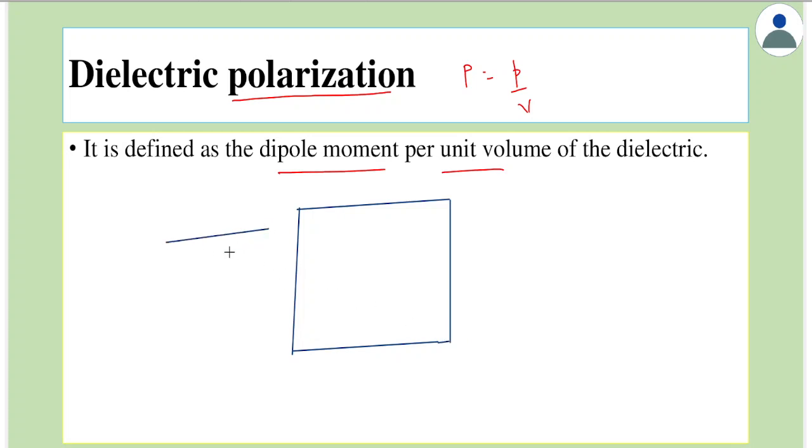If we apply an external field, then the dipoles would be polarized. Suppose if this is the applied field, then we saw that in case of a polar molecule, the dipoles are aligned in the same direction.